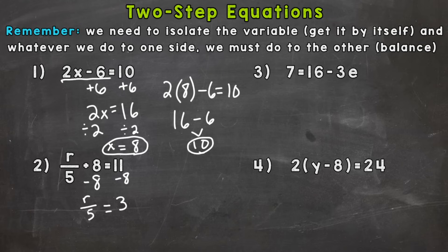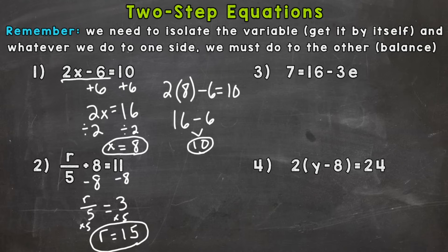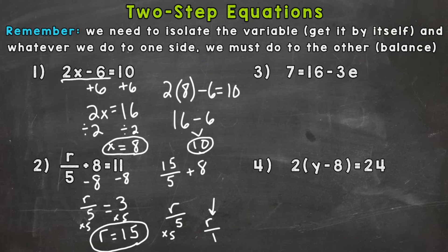The opposite of dividing by 5 is multiplying by 5. So let's multiply both sides by 5, and we get r equals 15. On the left side we had r divided by 5, and we multiplied by 5, which gives us r over 1 — or just r — isolating the variable. Let's plug in 15: 15 divided by 5 is 3, bring down our 8, and 3 plus 8 gives us the 11 we wanted.